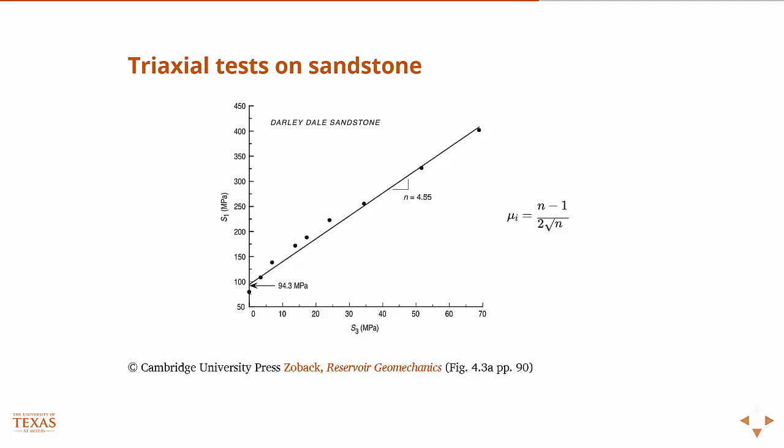And the slope of that line is n. Now this is on the S1, S3 axis, but they're all related through the geometry of the Mohr's circle so that you can then infer or determine what the internal friction angle is, mu, from the slope of this. And the cohesion is the y-intercept.